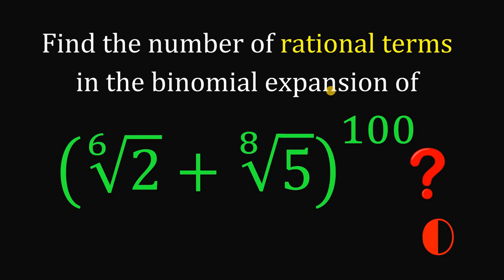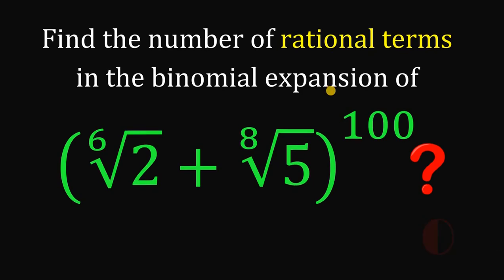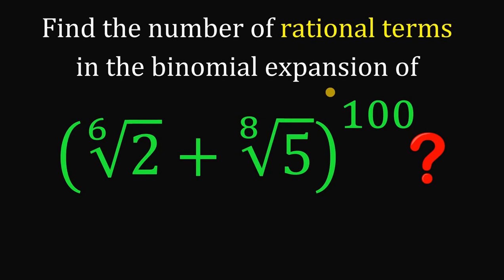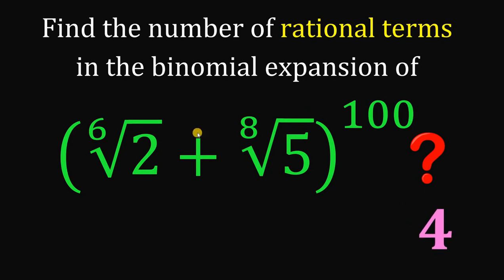Now let's answer this question together. Before we start, the answer to this question is simply equal to 4. So we only have 4 rational terms in the binomial expansion of ⁶√2 plus ⁸√5 raised to 100.